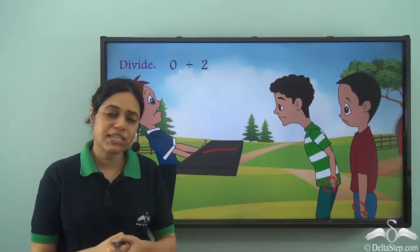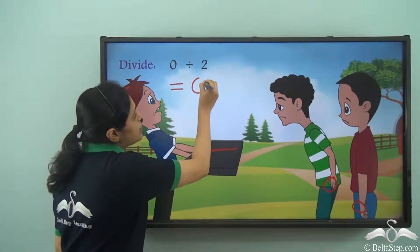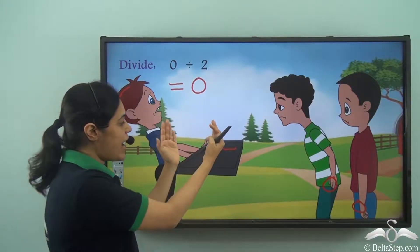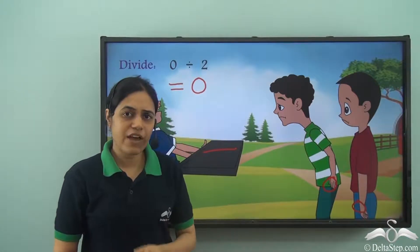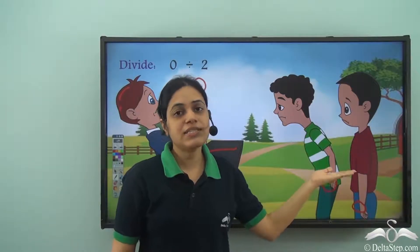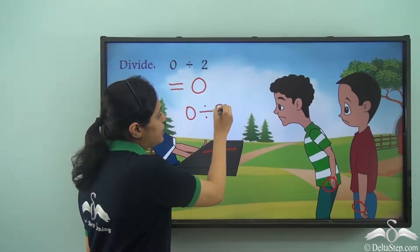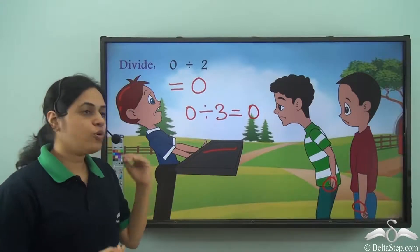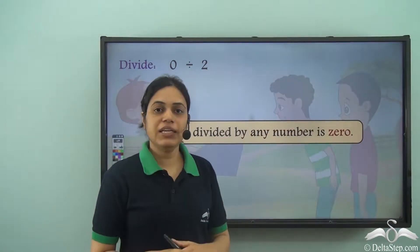No toffees means zero toffees, so zero divided by two is zero. When I divide zero of something between two people, each of them gets zero. This is very obvious — if I have nothing, I can't give anything to anyone. Now suppose there were three friends instead of two; they would also get nothing, so zero divided by three is also zero. In fact, if there were any number of friends and no toffees, each would get zero. So zero divided by any number is zero.